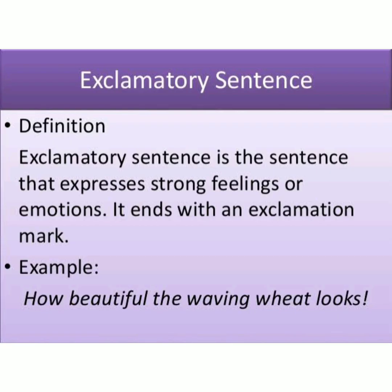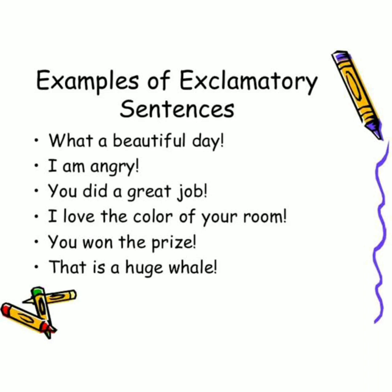The fourth kind of sentence is the exclamatory sentence, which is a sentence that expresses strong feelings or emotions. It ends with an exclamation mark. For example: 'How beautiful the waving wheat looks!' Other examples include: 'What a beautiful day!' 'I am angry!' 'You did a great job!' 'I love the color of your room!' 'You won the prize!' and 'That is a huge veil!'